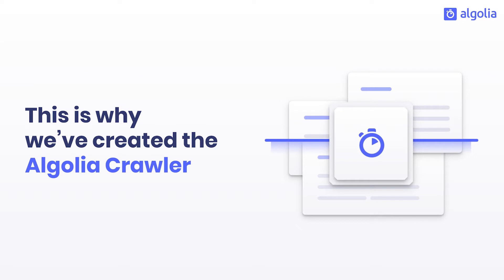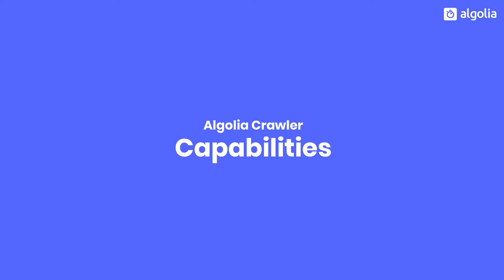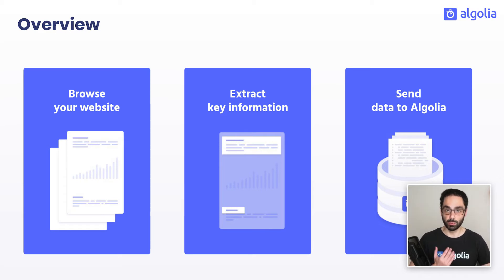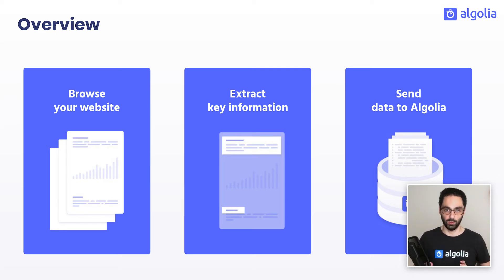That's why we created the Algolia crawler. The main idea behind it is to help you take your data and send it to Algolia. Now let's cover the main capabilities of the crawler. Once properly configured, the crawler will be able to do three main things. First, it will browse your website, click on links, and discover all of your content.